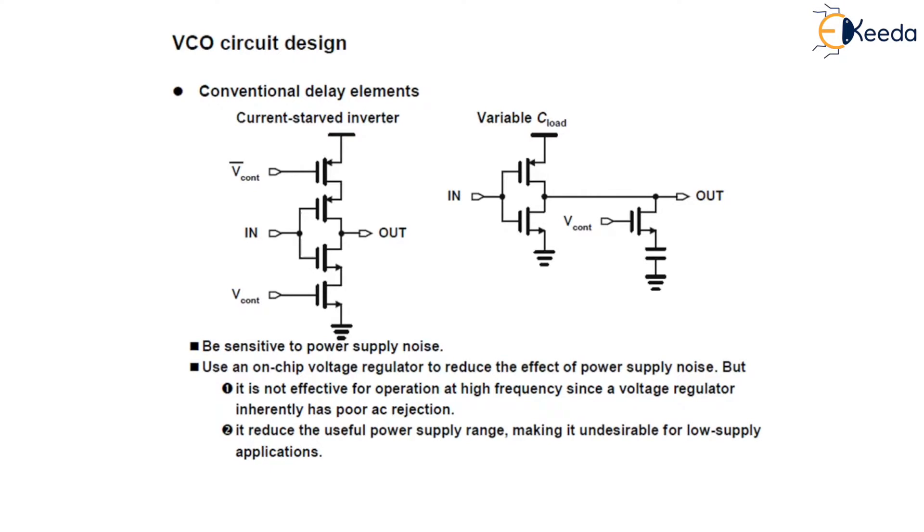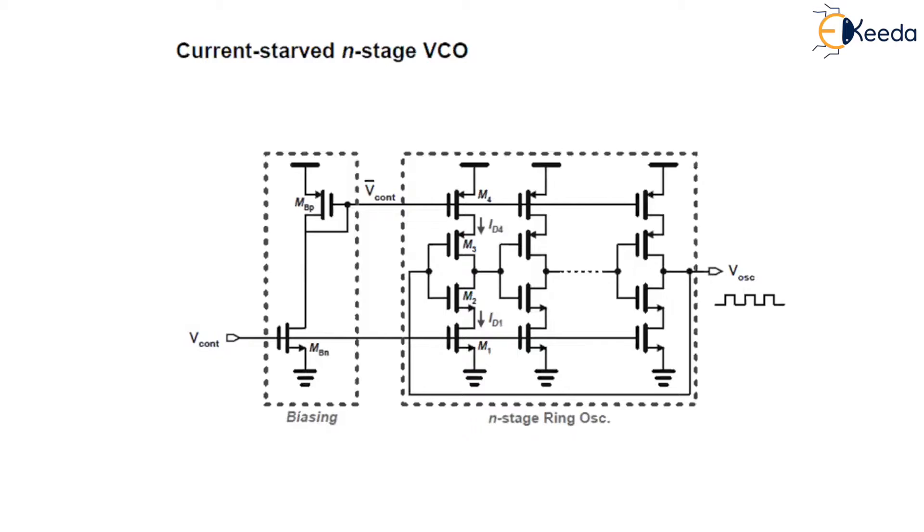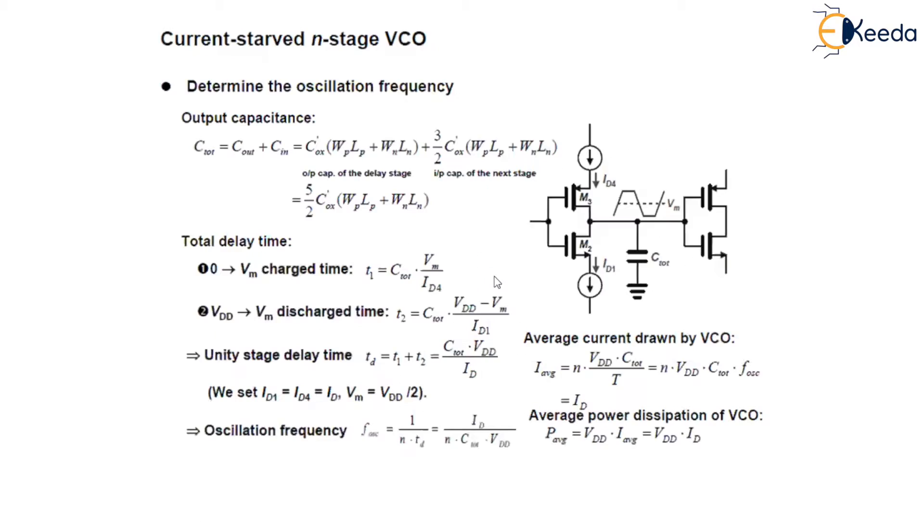This is a current-starved n-stage VCO in which we have used n stages for voltage-controlled oscillator. This acts as an n-stage ring oscillator where this is a biasing for this n-stage ring oscillator. Let us see the different specification design for this current-starved n-stage VCO.